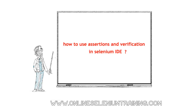Let's see assertion or assert first. This allows the test to check if the element is on the page. If it is not available then the test will stop on the step that failed. The second is verification or verify. This also allows the test to check the element is on the page, but if it is not available then the test will carry on executing.